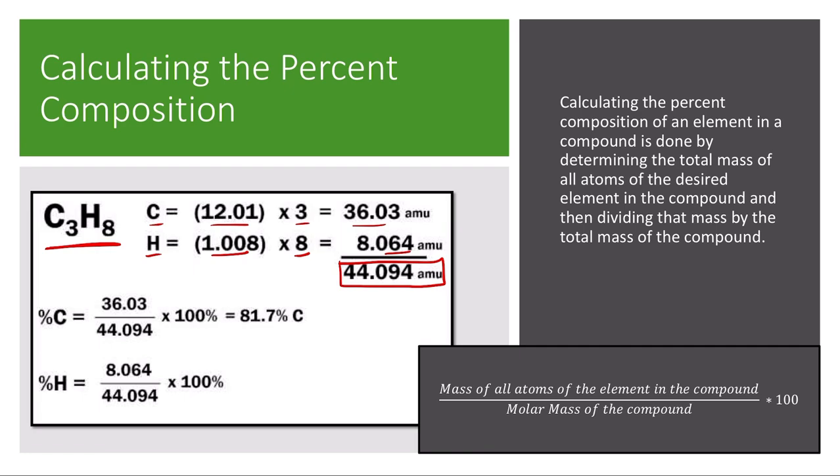Then if I wanted to find out the percent by mass for carbon, I would take the entire mass from all of the carbon atoms in that particular molecule, 36.03, and divide that by the total mass of the compound, the molar mass 44.094, and then multiply it by 100. That would tell me that 81.7 percent of the mass comes from carbon atoms in this compound.